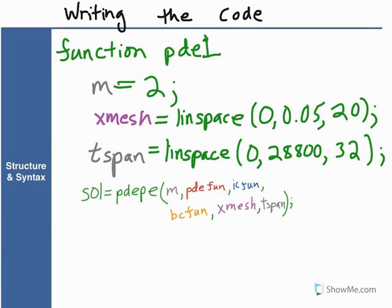Next, we can go ahead and call our PDEPE solver. We're just going to write out solution equals pdepe and put in the names of all of the functions. So the PDE function, the initial condition function, the BC function. We're going to define these six functions later on in the code. Right now, we're just setting it up.